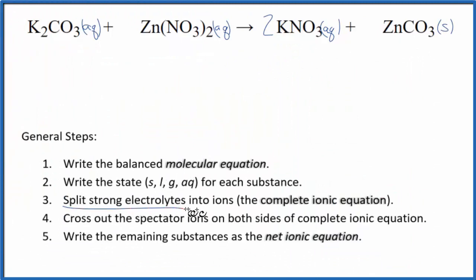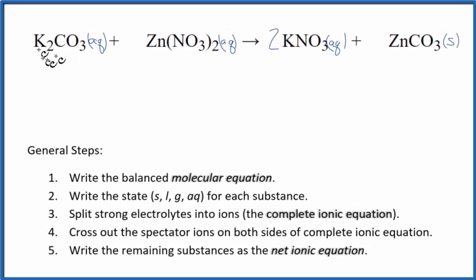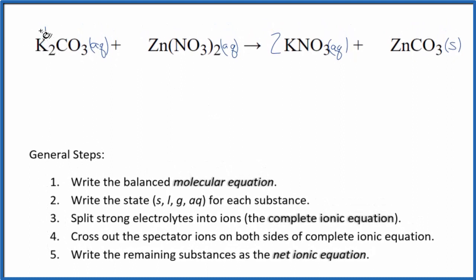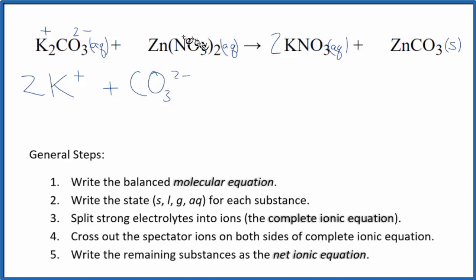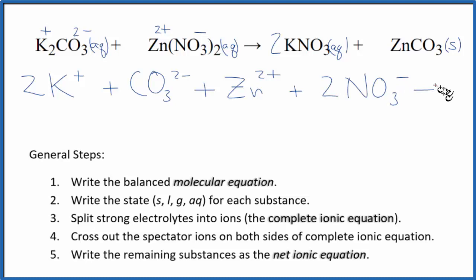Next, we need to split the strong electrolytes into their ions for the complete ionic equation, also called the total ionic equation. Potassium is in group one on the periodic table, so it has a one-plus ionic charge. The carbonate is always two minus. So we'll have two potassium ions, 2K⁺, plus a carbonate ion, CO₃²⁻. Nitrate is always one minus, and since we have two of them — zinc is two plus, and even though zinc is a transition metal, it is always two plus. So we have our zinc two-plus ion plus two nitrate ions.